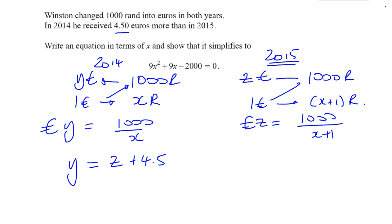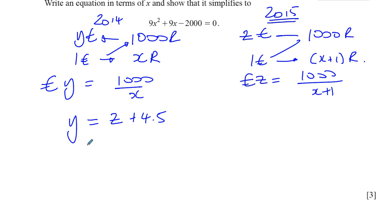So we connected these things together with this equation. So if we just now write these in terms of what we have in x, we can say 1,000 over x is equal to z, which is 1,000 over x plus 1 plus 4.5. Another way of thinking of it, it's saying that he got more in 2014 than in 2015. So if you subtract what he got in 2015 from what he got in 2014, you're going to get 4.5. So y minus z, the difference between what he got in 2014 and what he got in 2015 is 4.5. I think this is a better way, actually, of thinking about it.